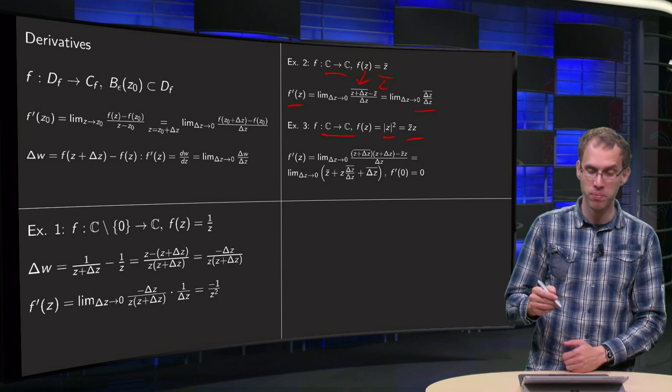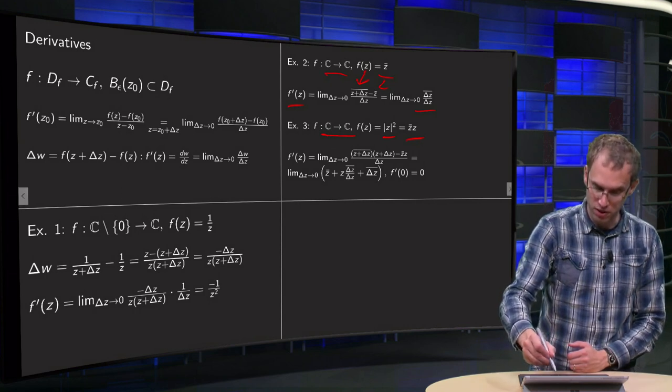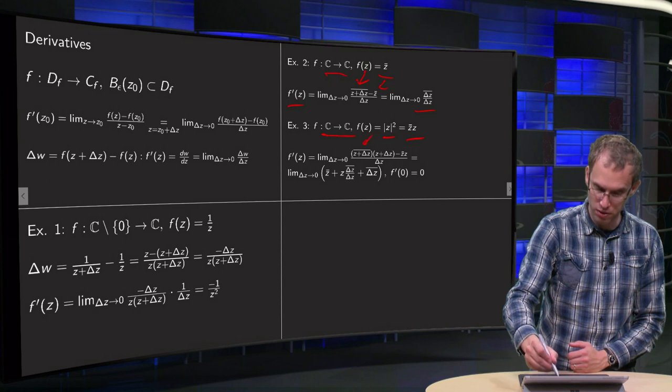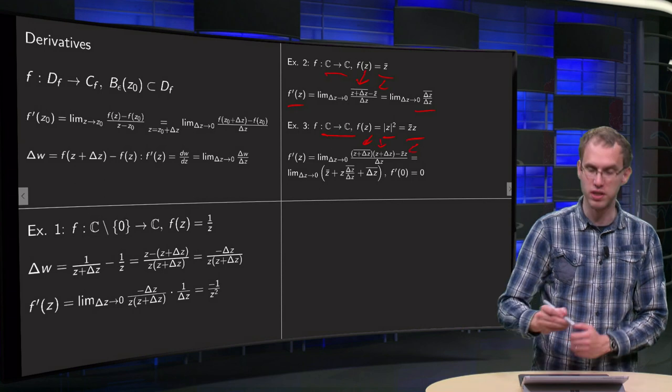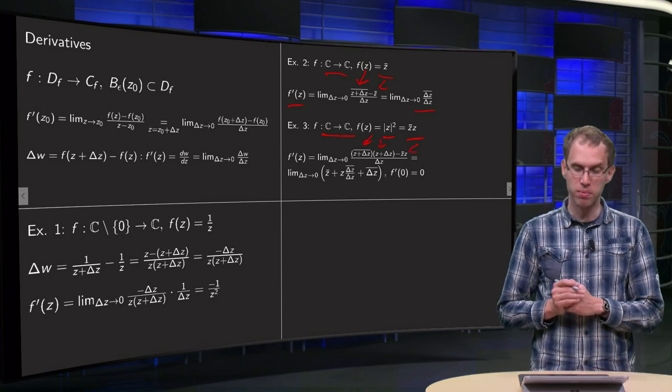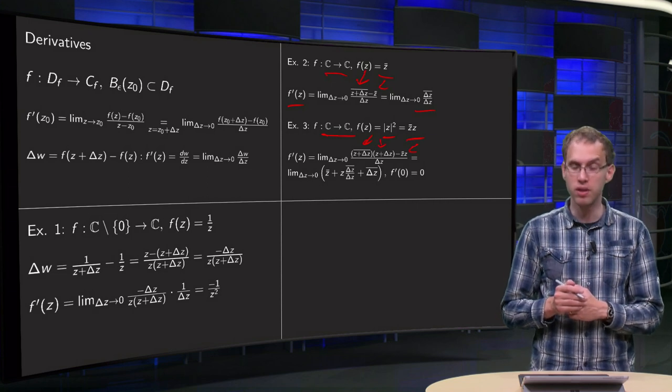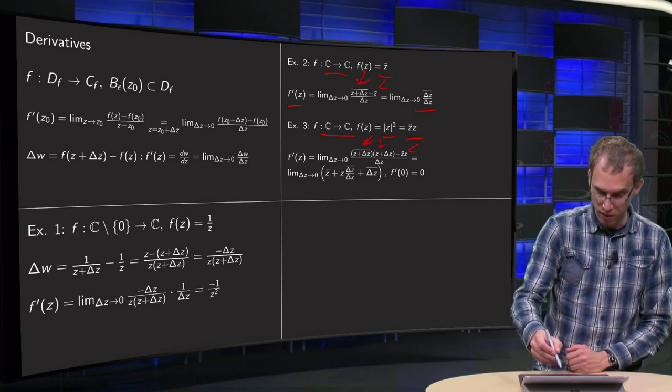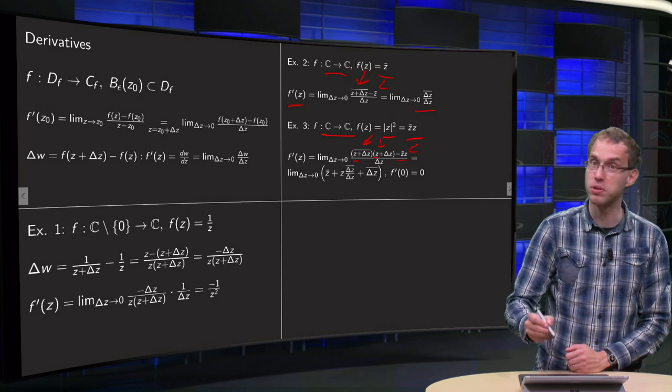Let's start to compute the derivative. So we get f of z plus delta z. So we get z plus delta z bar times z plus delta z minus f of z minus z z bar divided by delta z. And if you work out the brackets, we find z bar times z minus z bar times z cancel out.